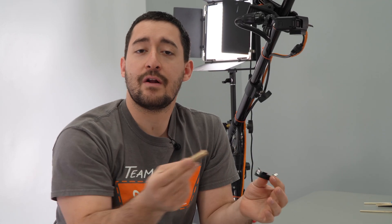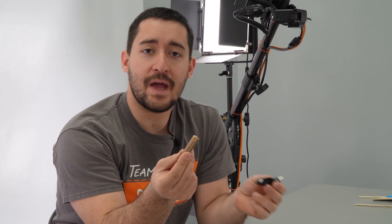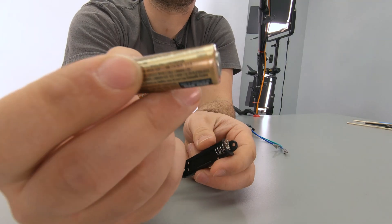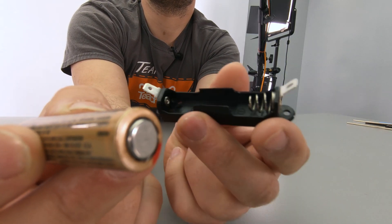First thing we're going to do is get our motor spinning. To do that, we're going to install the AA battery in the battery holder so that the flat part of the battery goes on the side with the spring.